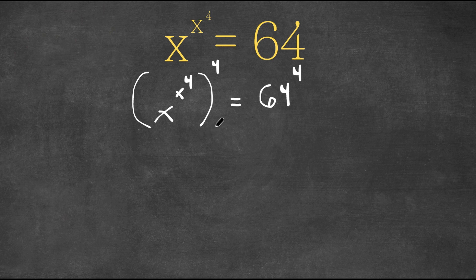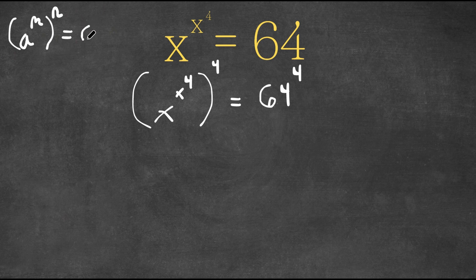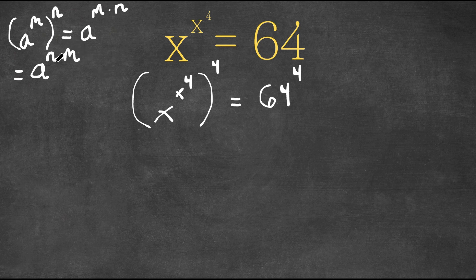Now, if we have something in the form a to the power of m to the power of n, this is equal to a to the power of m times n. And a to the power of m times n is also equal to a to the power of n times m, meaning we could rewrite this as a to the power of n to the power of m.